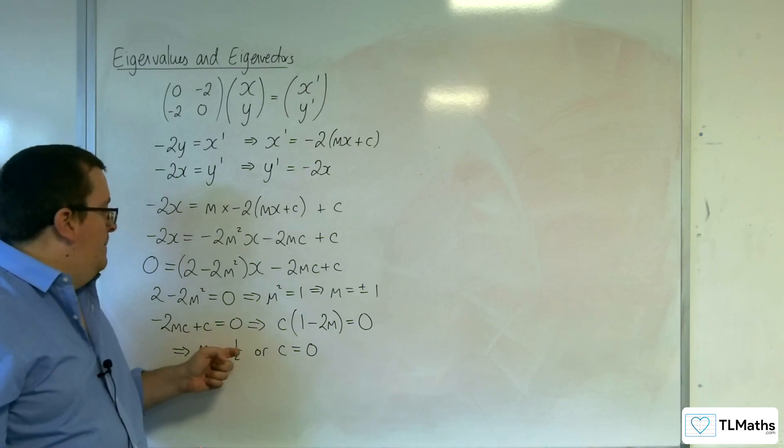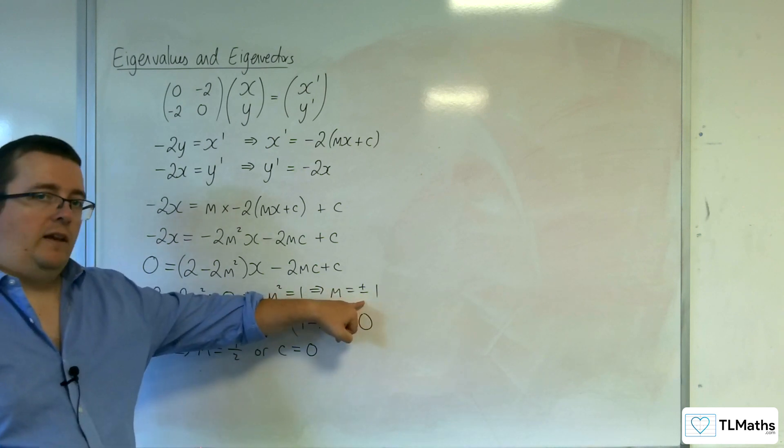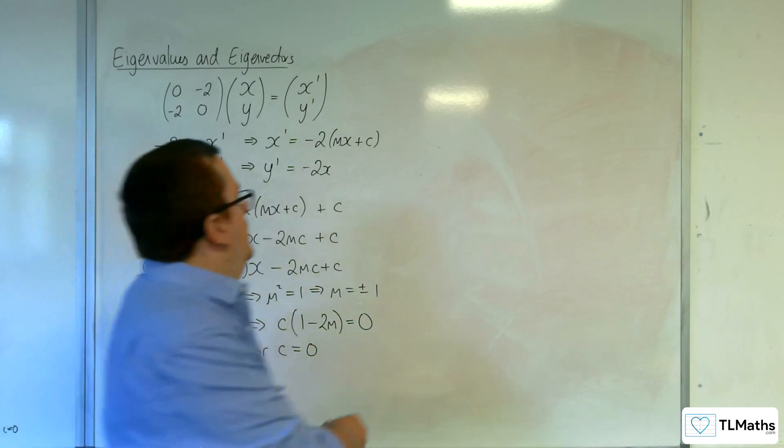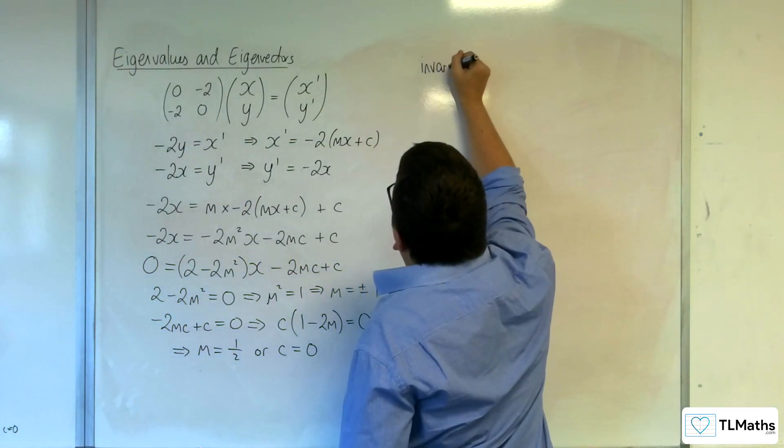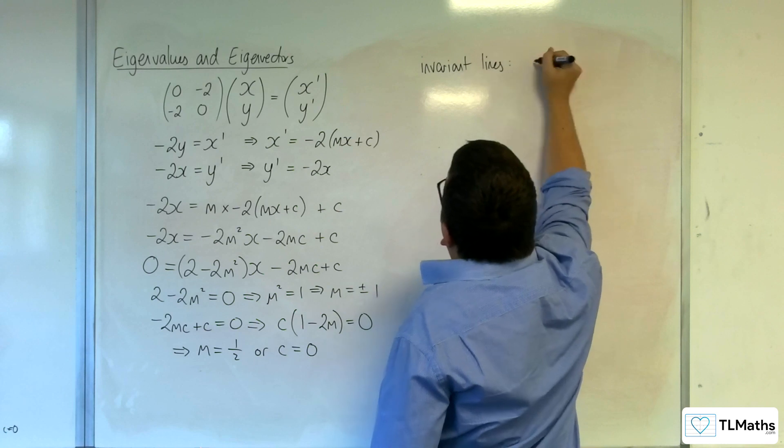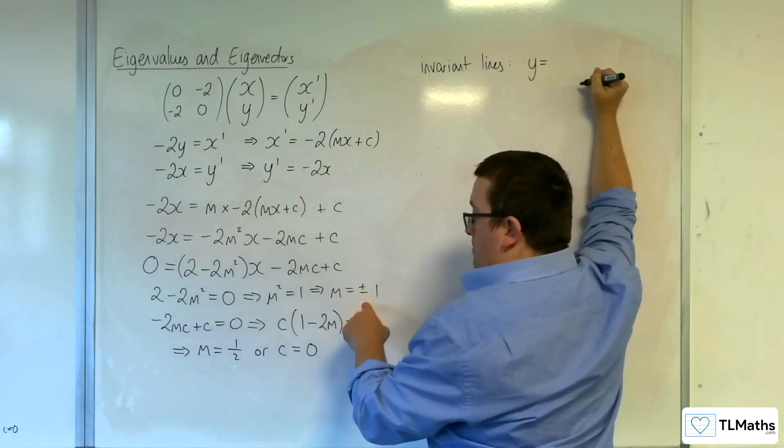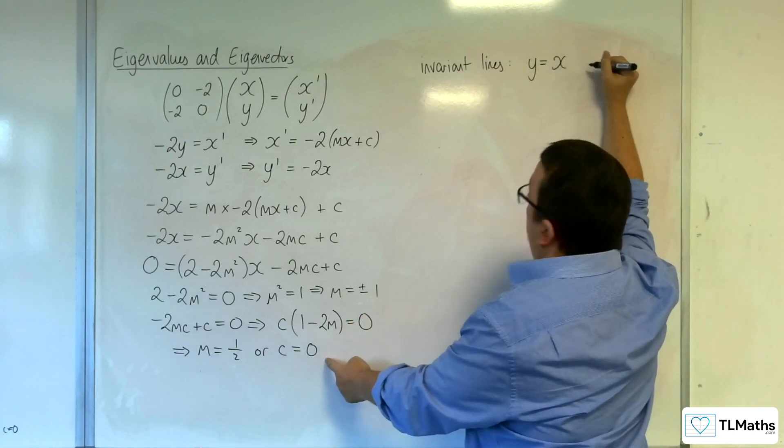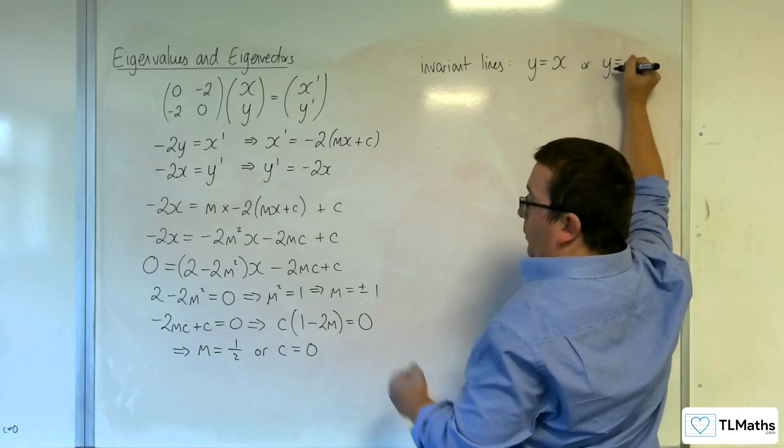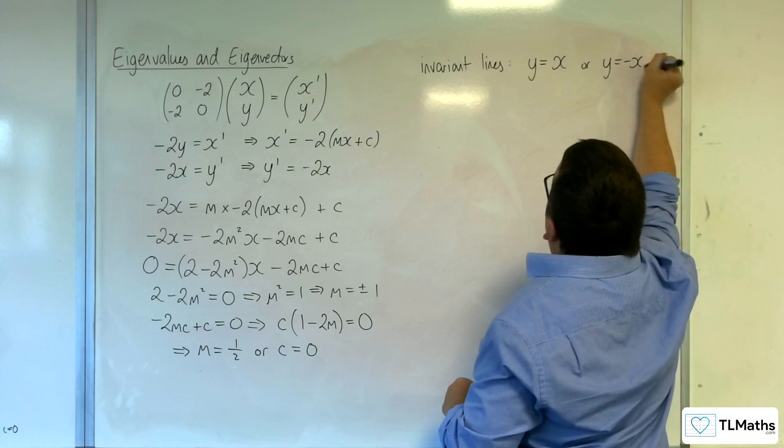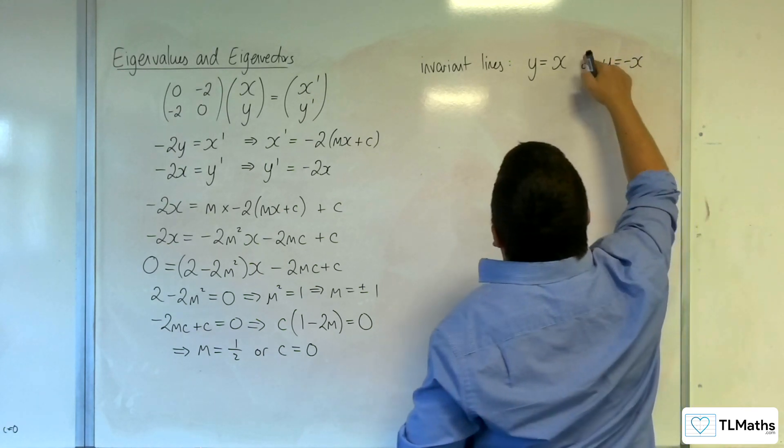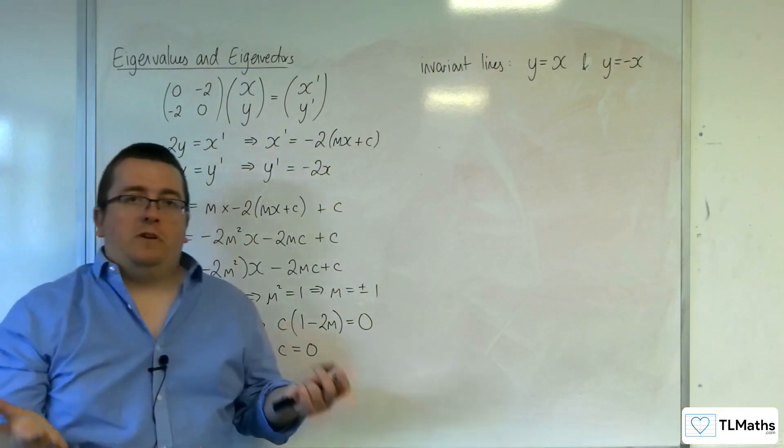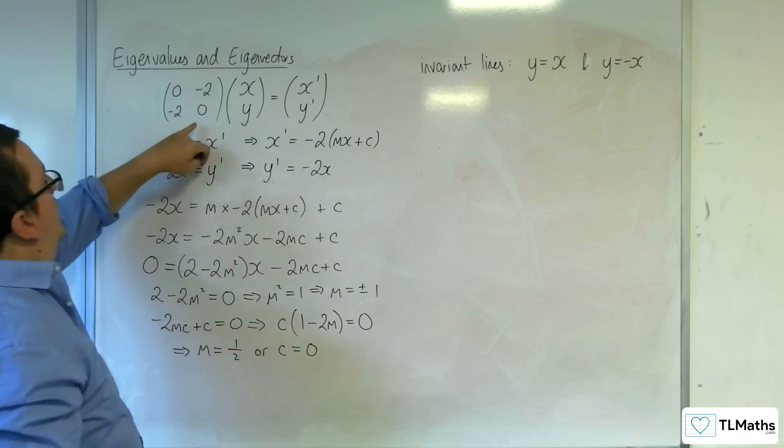Now, this also needs to be equal to 0. So we've got the minus 2mc plus c equals 0. If I factorize that for the c, I'll have c lots of 1 take away 2m equals 0. Now, that implies that either the m must be equal to 1 half, or the c must be equal to 0. Now, seeing as the m equals 1 half is not syncing up with the plus and minus 1 that I have there, that means that c has got to be 0. So my invariant lines must be y equals 1x plus 0, or y equals minus 1x plus 0. So y equals x and y equals minus x are the invariant lines of this matrix.